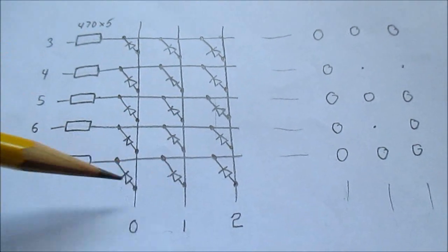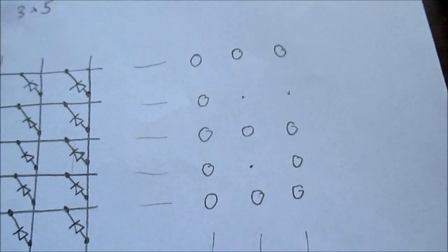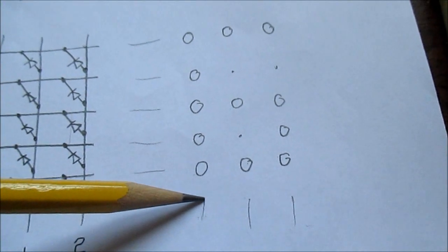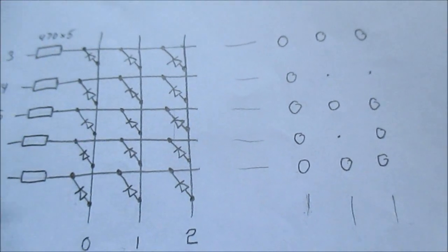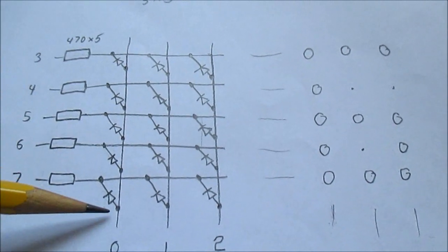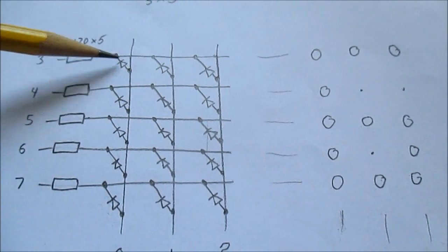And it scans through very fast, and to the eye it looks solid, like a solid number. So if I'm going to make the number 6, I first turn on column 1 and turn all the rows low. So that current will flow from the high to the low through each LED, and it makes this part of the number 6.